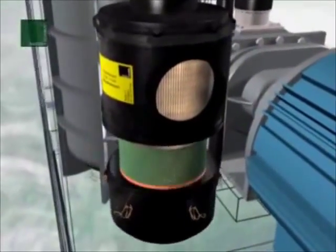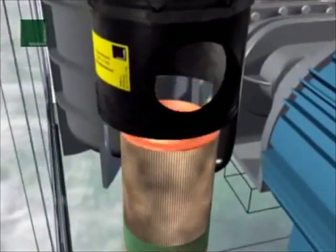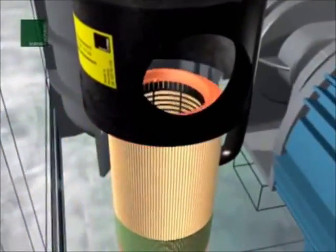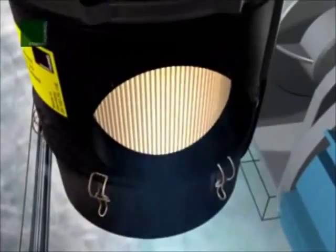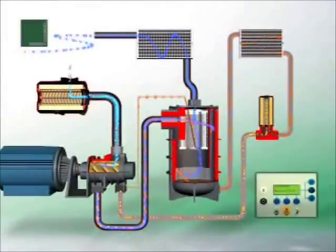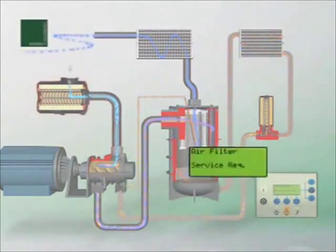Mann & Hummel filter elements are only made from high quality materials. But even they have to be changed from time to time. A differential pressure indicator signals the right time and sends a signal to the compressor display.